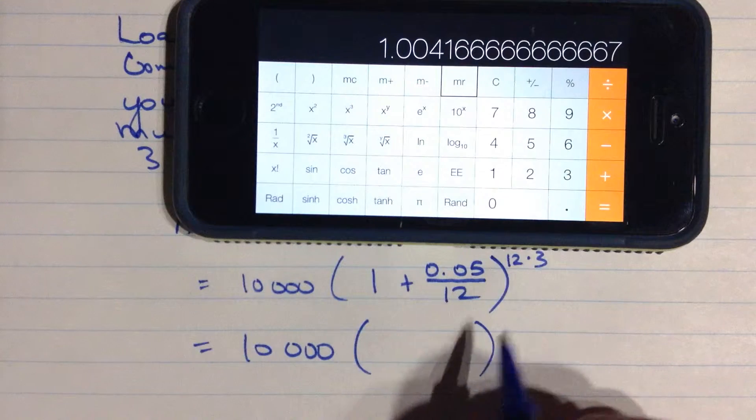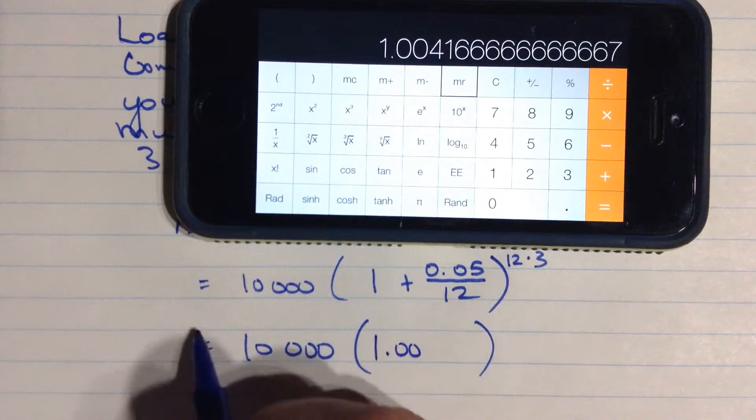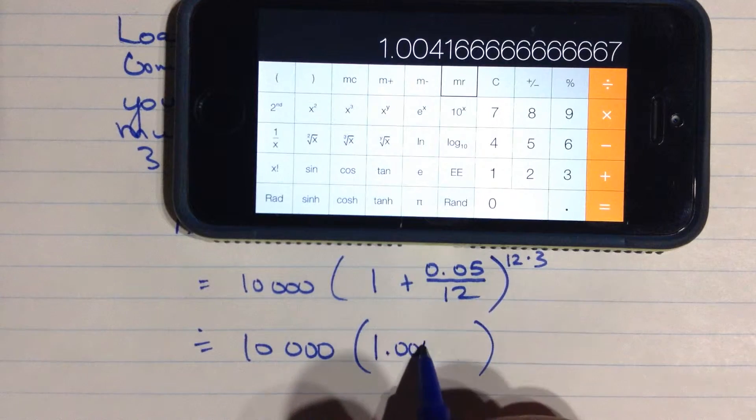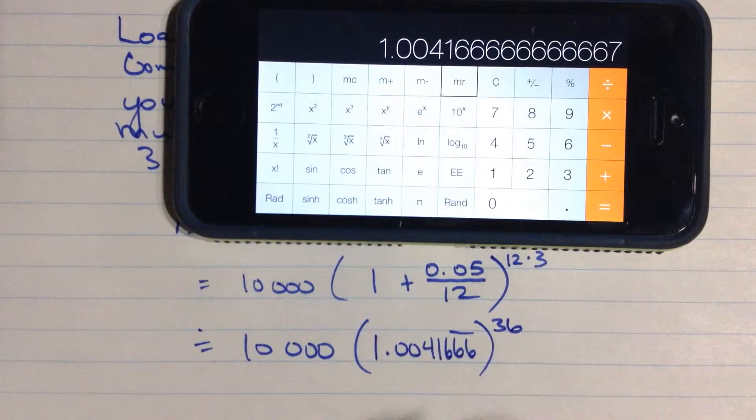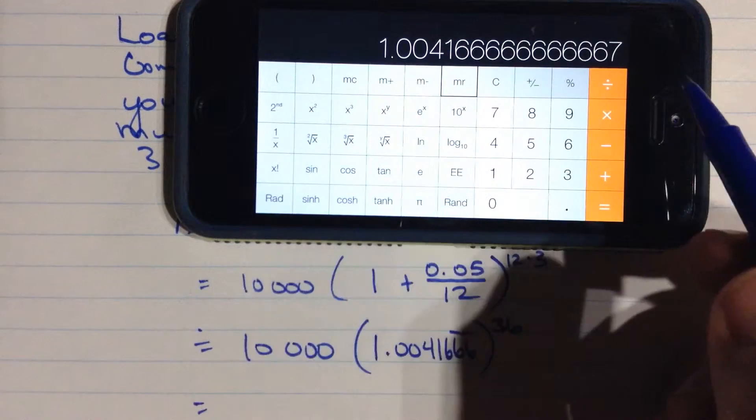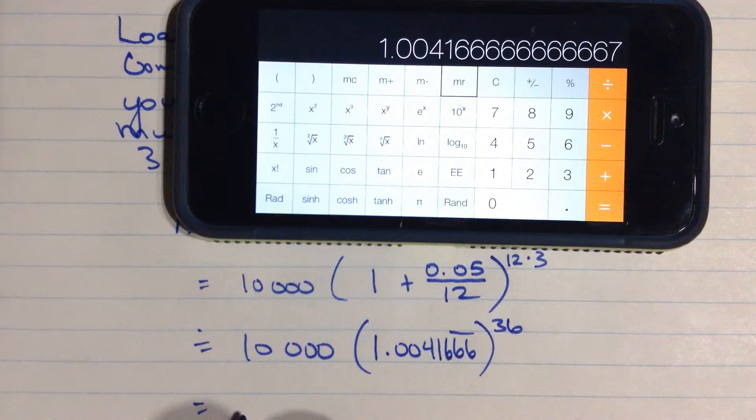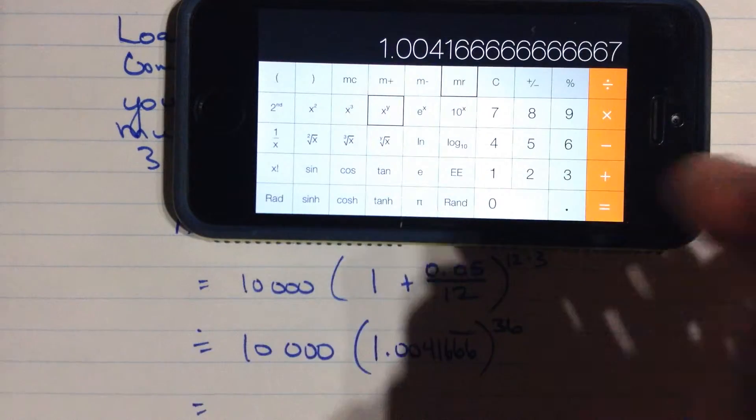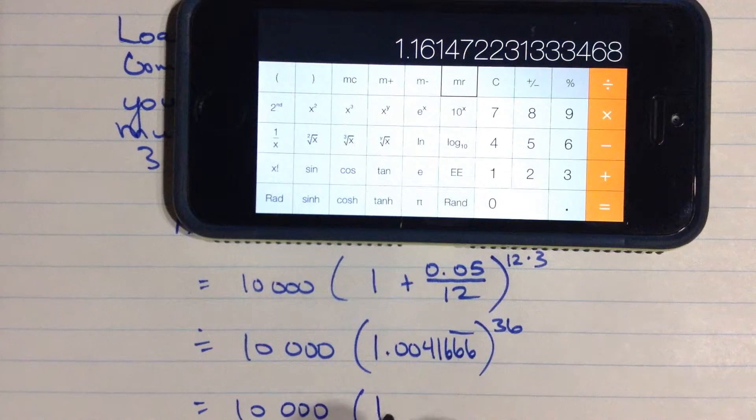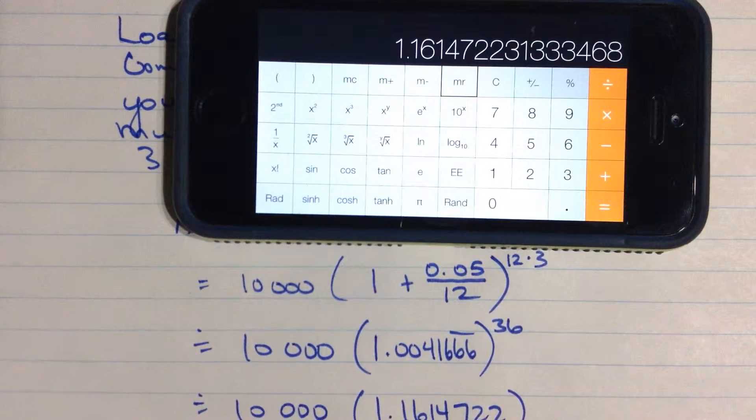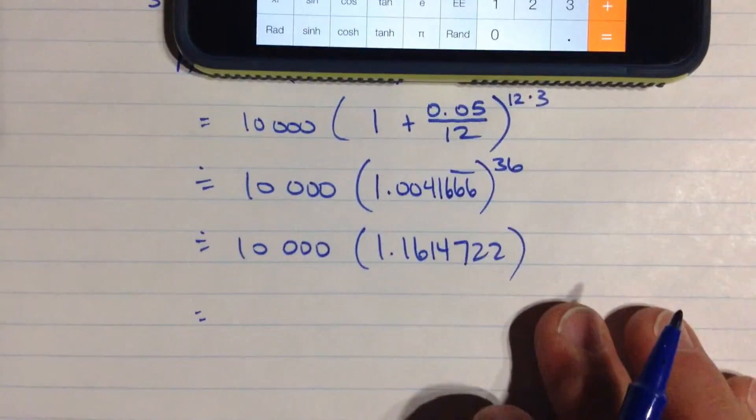And then raise it to the power 36. So I'm going to write it down here with a little approximately, 4, 1, 6, 6, 6. And actually it's repeated. And then raise that to the power 36. So I have this gigantic number here ready to use. And I'm going to just raise it to the power right now, 36. And there's that expression. So I'm going to write this down here. 1.1614722. This is approximately equal. And there's some more decimal places after that.